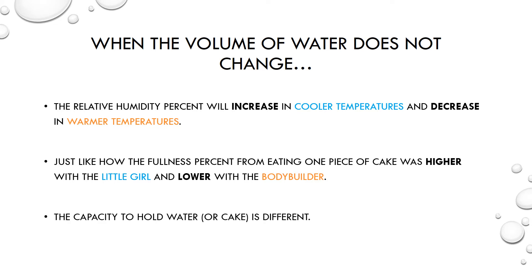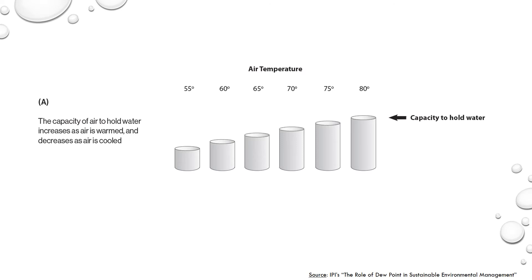The capacity for warm and cool air to hold water is different. This diagram, created by the Image Permanence Institute, shows how the temperature of the air affects its capacity to hold water. See how the cylinder size increases as temperature increases? The cool 55-degree air has a lower capacity, like the little girl, and the warm 80-degree air has a higher capacity, like the bodybuilder.